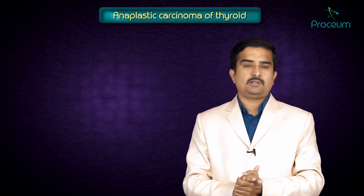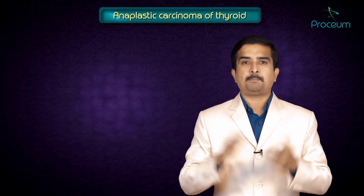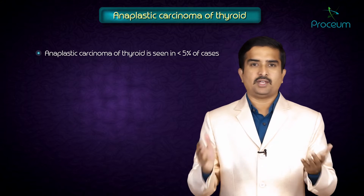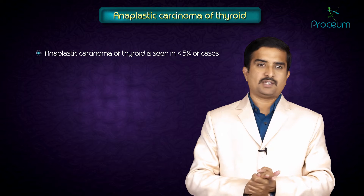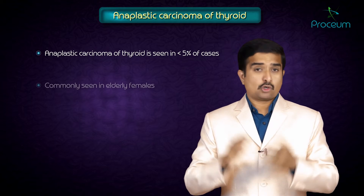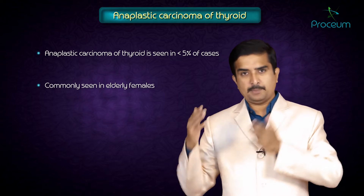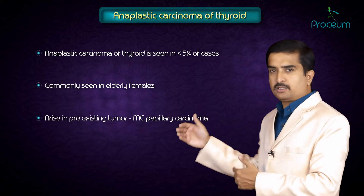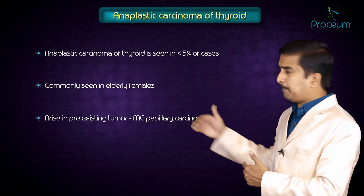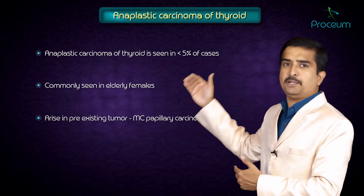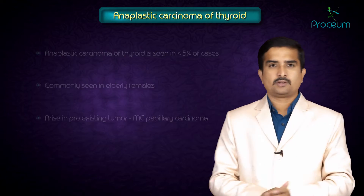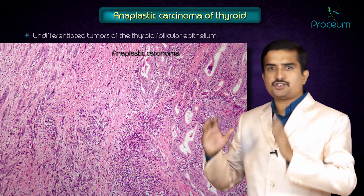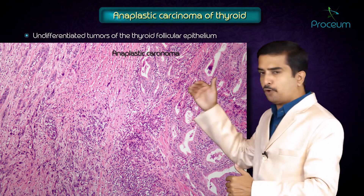The fourth type is called anaplastic carcinoma of the thyroid, seen in less than 5% of cases. It is more commonly seen in elderly females and mostly arises in a pre-existing tumor, most commonly papillary carcinoma, which may develop into this. Anaplastic thyroid cancers are undifferentiated tumors of the thyroid follicular epithelium.